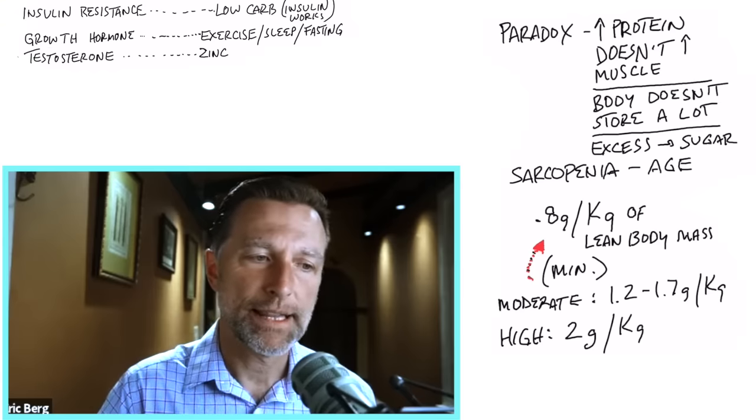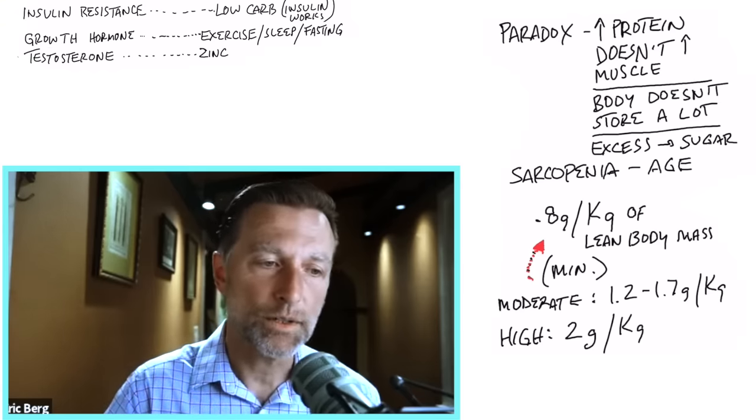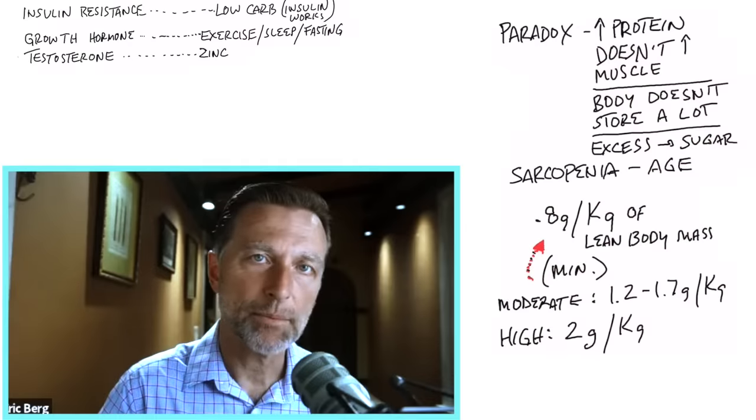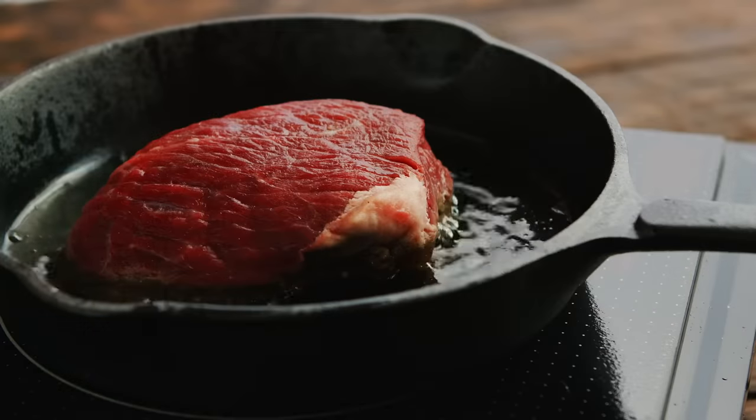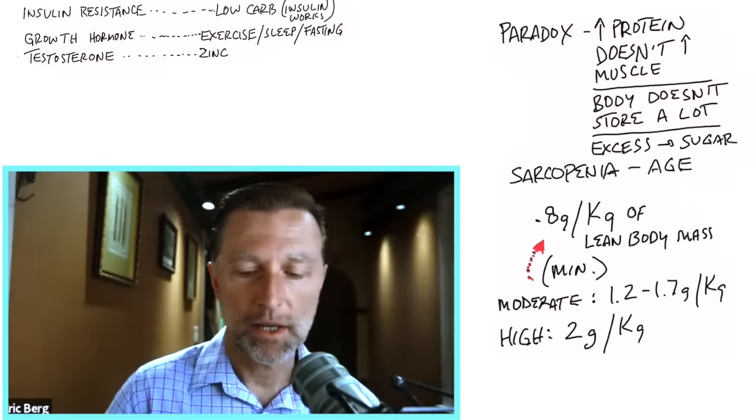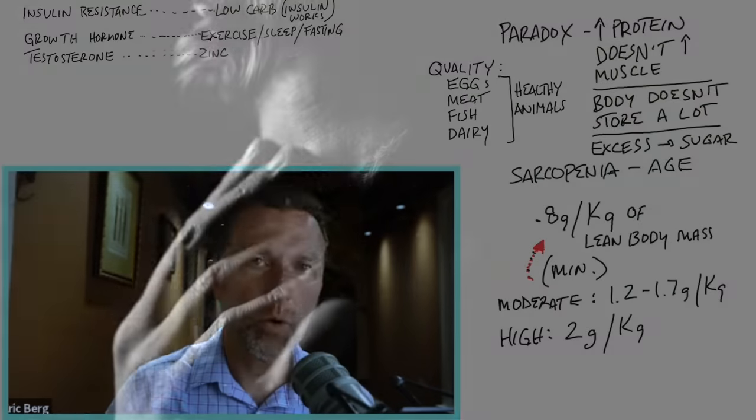One amino acid that I want to bring up is leucine. Leucine is a potent stimulus of the production of muscle. So mostly you're going to see low leucine foods in plant-based foods. You're not going to see this in animal meats, things like that. So it's the type of protein that's important too. Eggs, meat, fish, dairy, all very, very important.